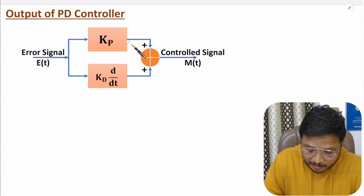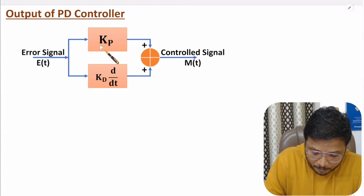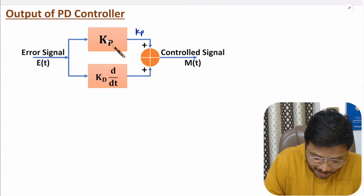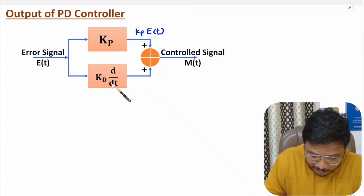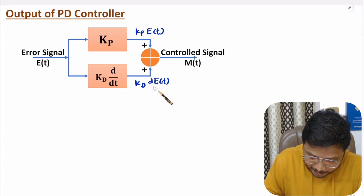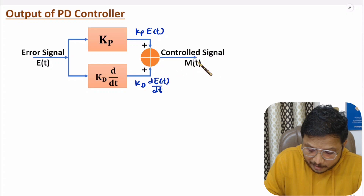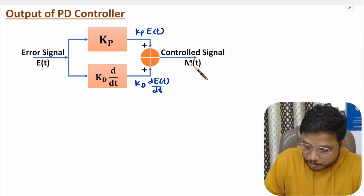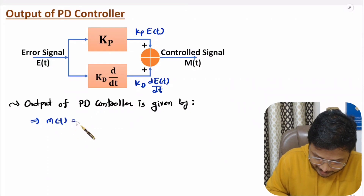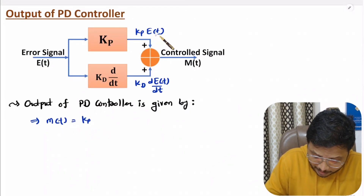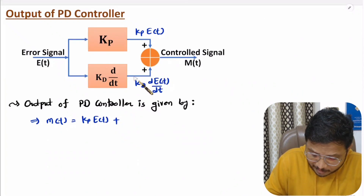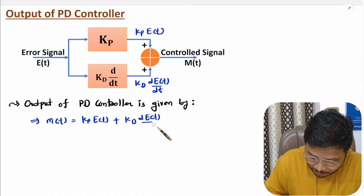The output of the PD controller is the algebraic sum of the output due to the proportional controller and the output due to the derivative controller. The proportional controller output is the constant Kp multiplied by the input e(t). The derivative controller output is the constant Kd multiplied by the differentiation of e(t) with respect to time. These two signals are added to give the controlled output m(t) = Kp·e(t) + Kd·(de(t)/dt).